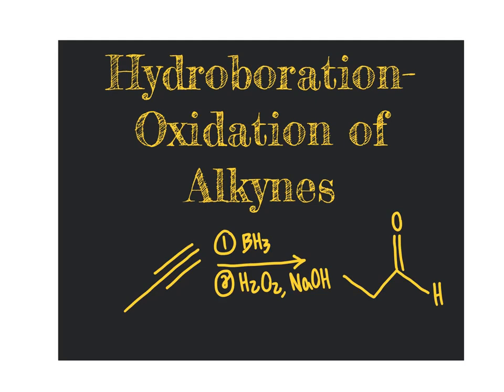In this unit, we focus on the reaction known as hydroboration oxidation of alkynes. The name of this reaction should ring some bells related back to alkenes, because we also talked about hydroboration oxidation of alkenes, where we were able to convert alkenes into alcohols going opposite Markovnikov's rule. Now, as we take a look at this reaction for alkynes, we will first do an opposite Markovnikov's rule addition of H2O across the carbon-carbon triple bond. Then we'll take the enol intermediate that results and do keto-enol tautomerization to convert the hydroxy group into a carbonyl group.